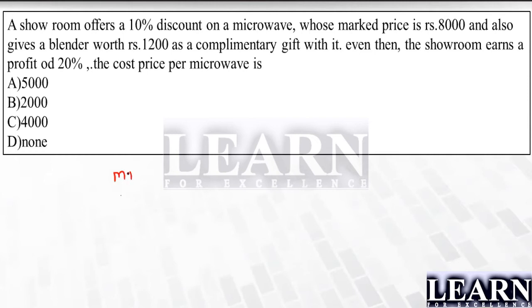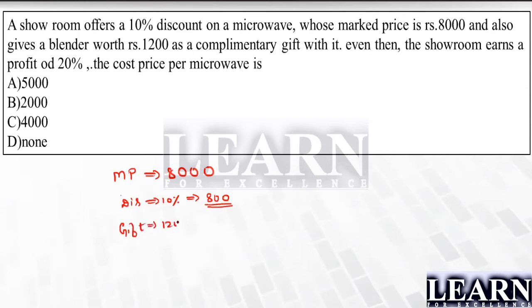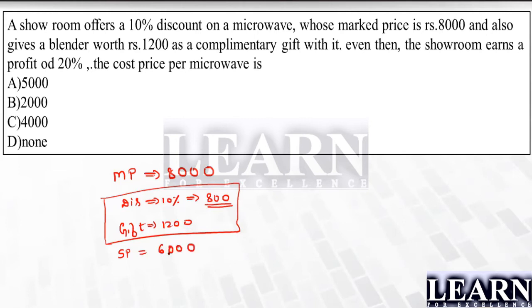The marked price is ₹8000. They are offering a 10% discount — 10% of 8000 is ₹800, so the discount is ₹800. Next, the gift is worth ₹1200. The total discount is 800 + 1200 = ₹2000. So the selling price is 8000 − 2000 = ₹6000.